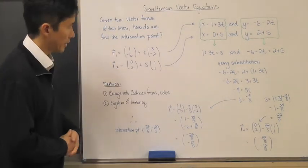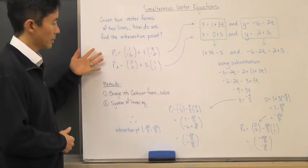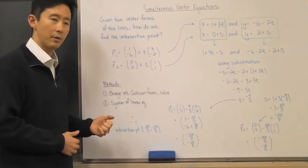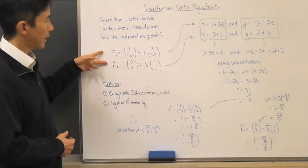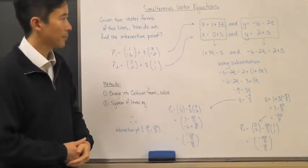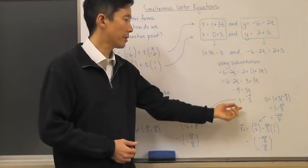So let's look at this again. Given two lines, how do we find an intersection point? We have two methods: change it into Cartesian form and solve, or use a system of linear equations by first taking the vector equation, changing it into parametric form, setting the x's and y's equal to each other, and solving for the different parameters.